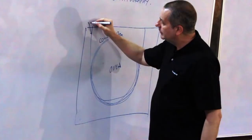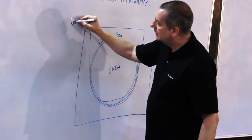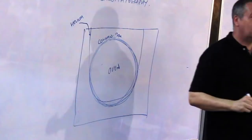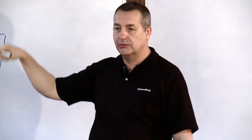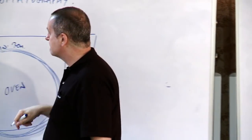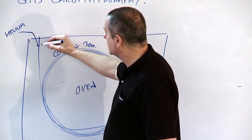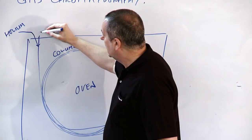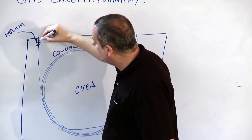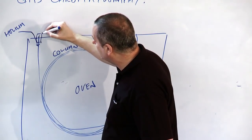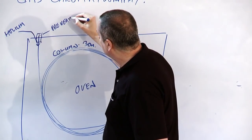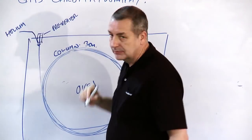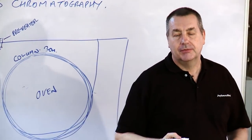And helium gas is blown down the tube, through the tube. It goes round the tube. And just at the top of the column, we have what's called a preheater which is kept at something like 250 degrees centigrade.